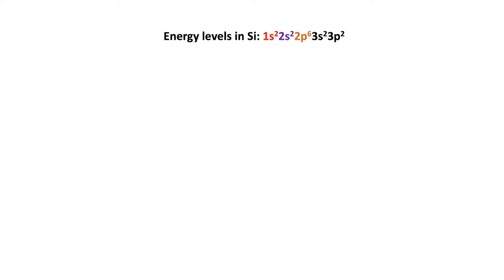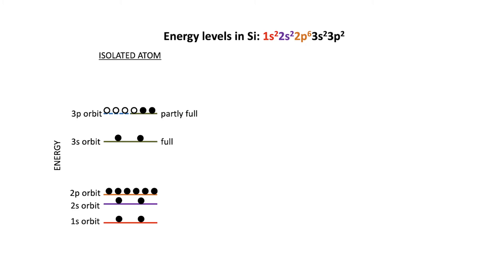Let's now consider the situation in a piece of silicon. The notation used to describe electron orbits works like this: in the first lowest energy 1s orbit, there are two electrons. In the 2s orbit, there are also two electrons. In the 2p orbit, there are six electrons. In the 3s orbit, there are two electrons. And in the 3p orbit, there are two electrons.